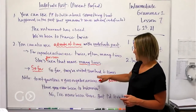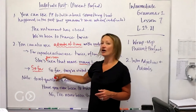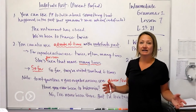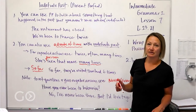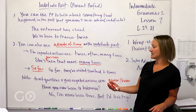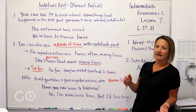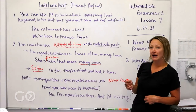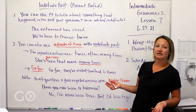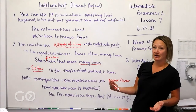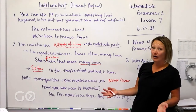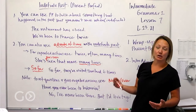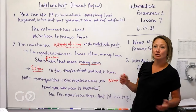Another way we can use this is with 'so far.' For example: 'So far, they have visited Thailand six times' — you're counting in this example. It also implies that it's possible they're going to go back to Thailand. 'So far they've been to Thailand six times' — maybe they will go again next year or this year.